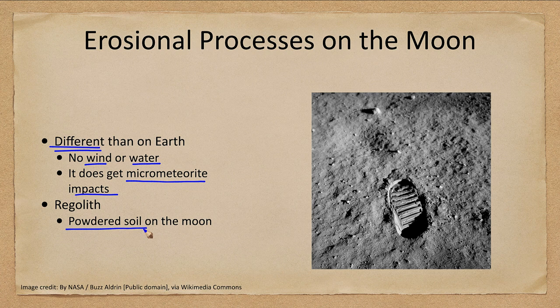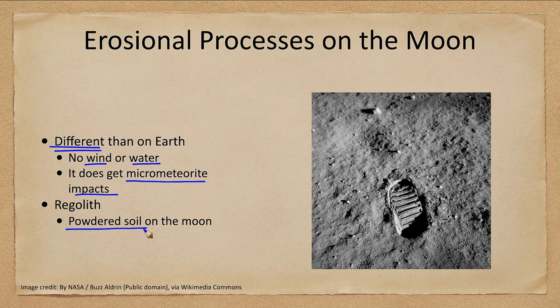These micrometeorite impacts slowly erode the moon's surface, but it takes a very long time — much, much slower than the wind or water erosion we have on Earth. The footprint shown was made 50 years ago and would look exactly the same if we went back to the moon today. A footprint on Earth would not last 50 years, but on the moon it can last for a million years. That is how slow the erosional processes are.